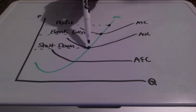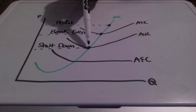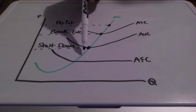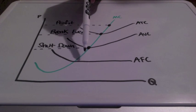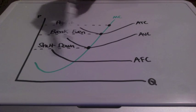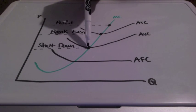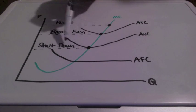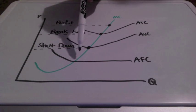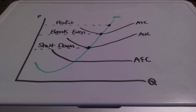If we're at this point along the marginal cost curve, we are at what we call minimum average variable cost. If our costs and our prices fall below average variable cost, we refer to this as a shutdown point. Anything below minimum average variable cost — any price below — the firm should shut down.